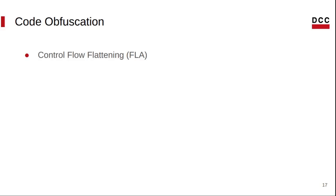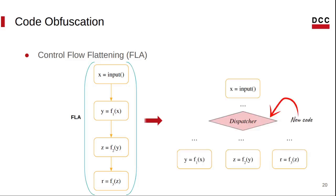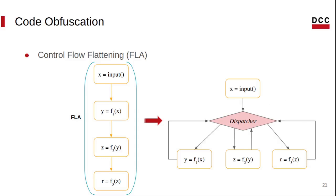Let us consider some examples of code obfuscations. Control flow flattening is a technique that involves controlling every jump in the code through a switch statement. Here on the left, we have an example of a program that receives an input and processes it through different code blocks. If you apply the control flow flattening transformation, a switch block is added as the dispatcher of the program, meaning it will be responsible for controlling the flow of the program. Consequently, every jump will be replaced by a case in the switch.